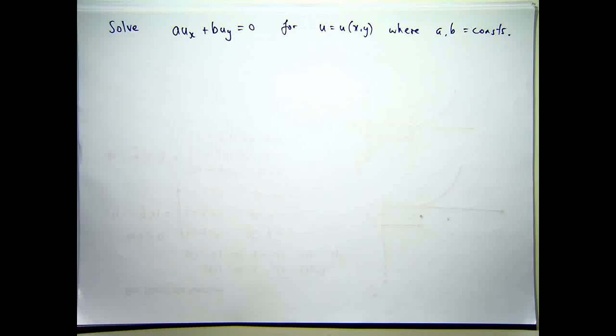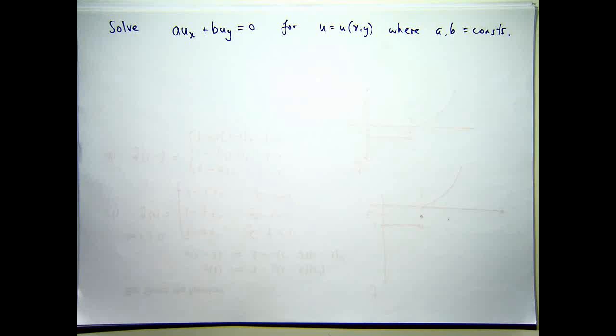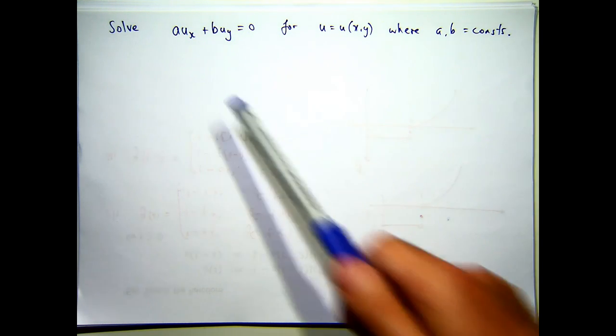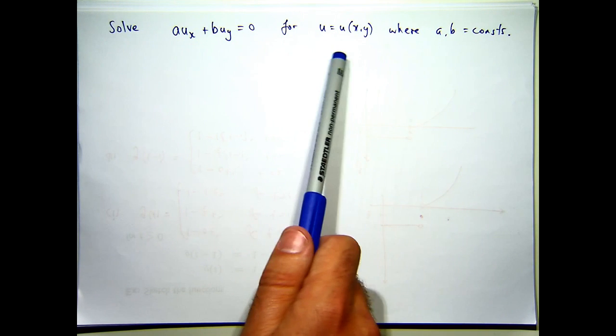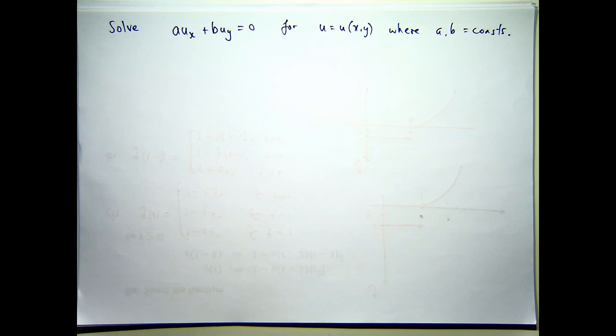In this presentation, we're going to discuss the method of characteristics for basic first-order partial differential equations, PDEs. And this particular equation, A and B are constants, u is a function of two variables, and the subscripts u_x, u_y mean just the partial derivatives with respect to x and with respect to y, respectively.